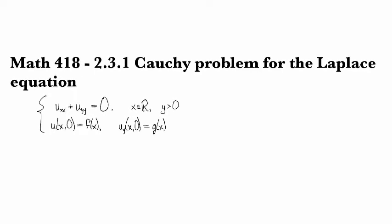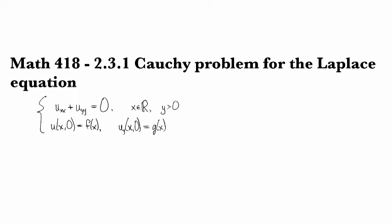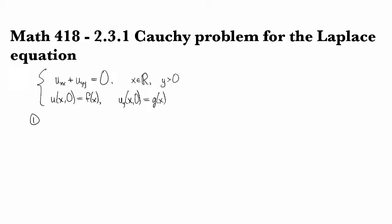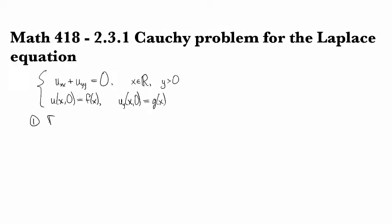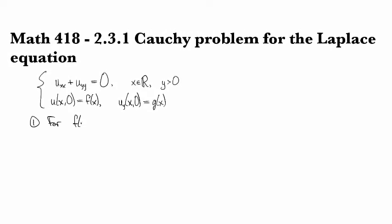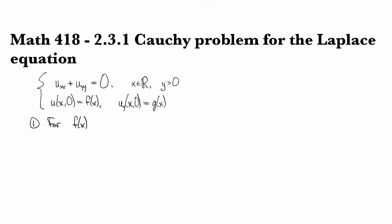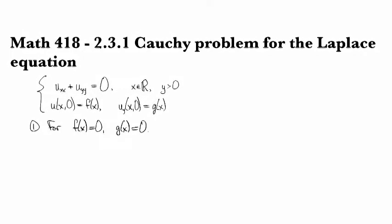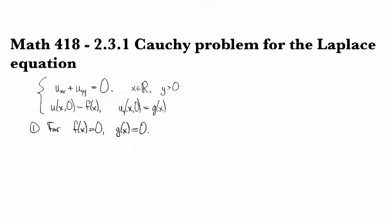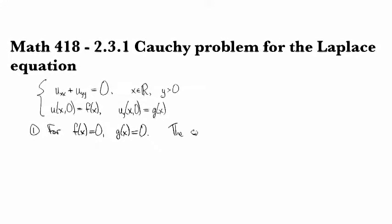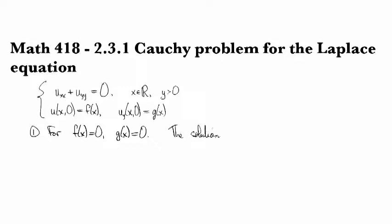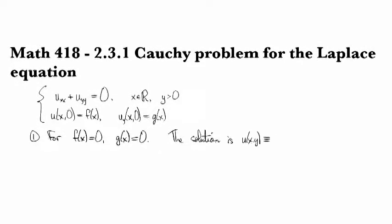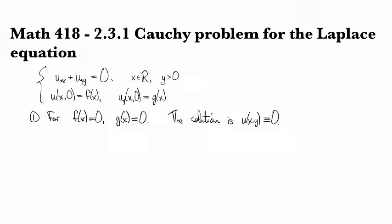There are some interesting features of this elliptic PDE that are best seen by looking at examples. For the first one, we'll take f(x) to be 0 and g(x) to be 0. Then you can check quite quickly that the solution is just the 0 function, u identically equal to 0.